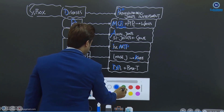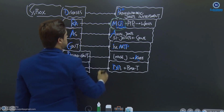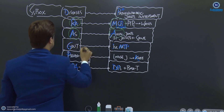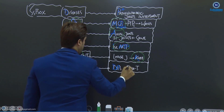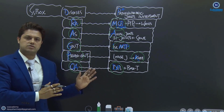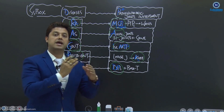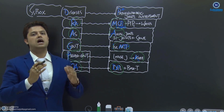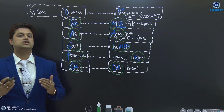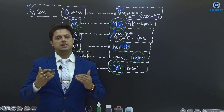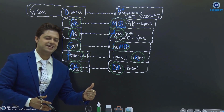Final revision: rheumatoid arthritis — MCPs (metacarpophalangeal joints). Ankylosing spondylitis — axial joints. Gout — first MTPs (first metatarsophalangeal joints). Pseudo-gout — knee joint. Osteoarthritis — DIPs. Knowing these facts will help you do your best on the exam. Thank you very much.